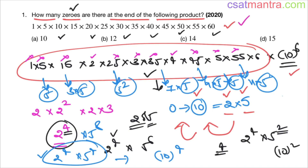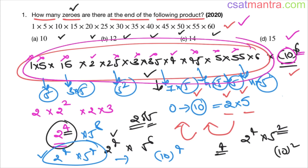Whenever a problem of this type is asked, look for direct tens and direct zeros first — separate them. We have 6 such tens. From the remaining product, find how many tens you can form. Remember: 10 = 2×5. To simplify quickly, look at whether there are fewer 2s or fewer 5s in the remaining product.